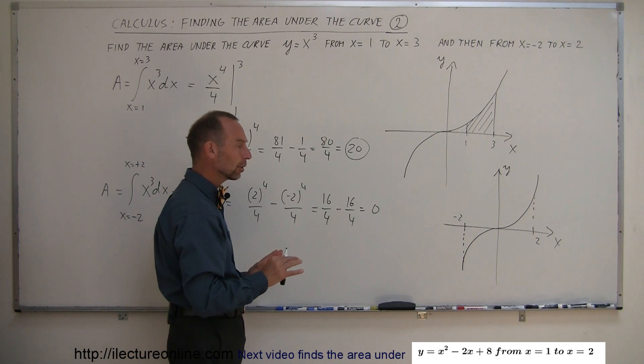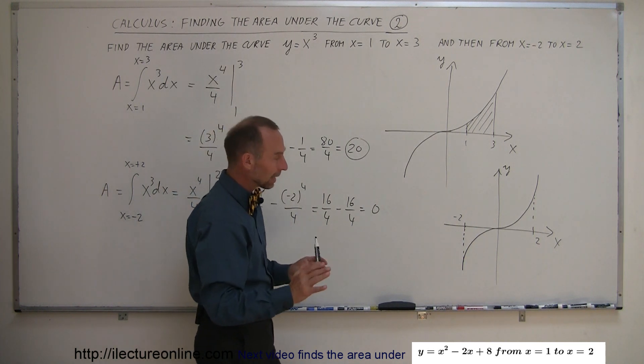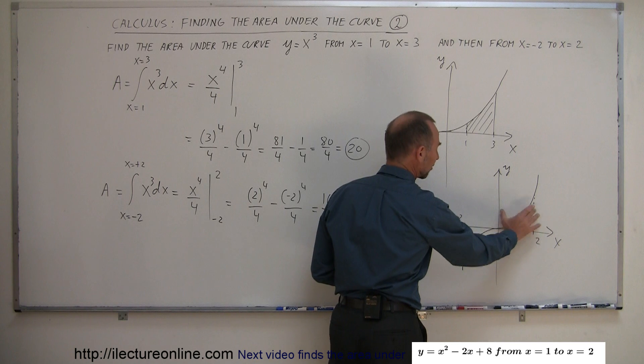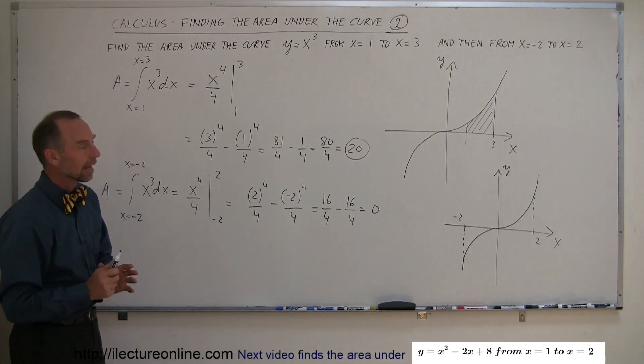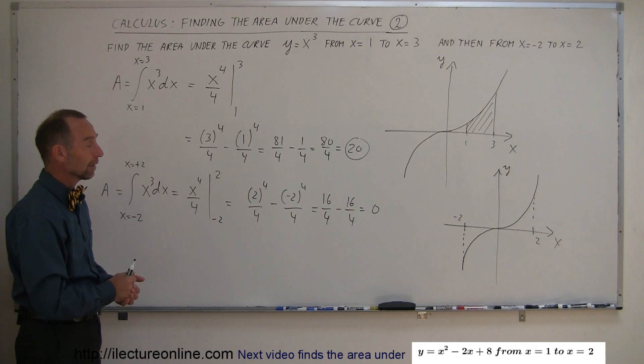Again, depends upon how you want to look at it and how the question is asked. Strictly speaking mathematically the answer here would be zero because this negative area will cancel out the positive area and the total area would be zero. But again depends how they ask the question. Here's a good example to keep in mind that whenever the area is underneath the curve it will be a negative area.